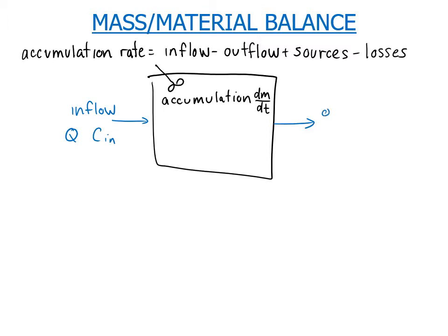It can leave via the outflow which will usually have the same volume flow rate Q and some concentration C. That C is the same as the C that's inside the box, it's well mixed so anywhere I grab a sample of the air it's going to contain concentration C. We can also have sources like emissions within the box and losses due to reactions or deposition on the surfaces.